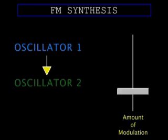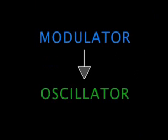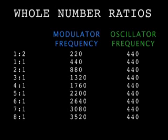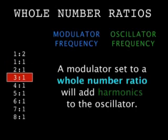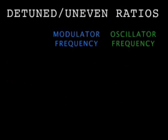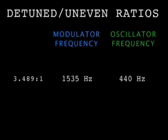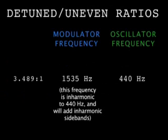We'll call this oscillator the modulator, since we only hear its effect and not the oscillator itself. If the modulator is set to an even ratio — exactly half, two or four times the oscillator's pitch — then you'll add harmonic overtones. If set to a non-ratioed pitch, like 3.489 times, you add inharmonic frequencies and the sound will become dissonant. It might be a little more complicated than that, but these are good guidelines to start with.